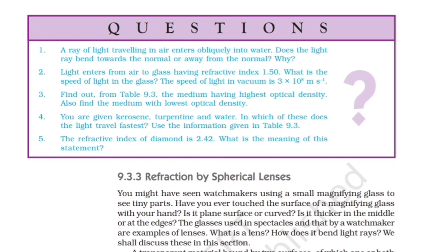Questions: 1. A ray of light traveling in air enters obliquely into water. Does the light ray bend towards the normal or away from the normal? Why? 2. Light enters from air to glass having refractive index 1.50. What is the speed of light in the glass? The speed of light in vacuum is 3 × 10⁸ m/s. 3. From table 9.3, find the medium with the highest optical density and the medium with the lowest optical density. 4. In which of kerosene, turpentine, and water does light travel fastest? 5. The refractive index of diamond is 2.42 — what is the meaning of this statement?